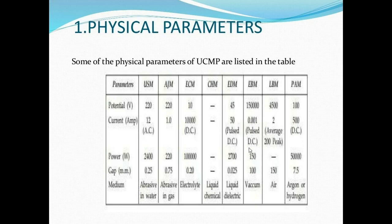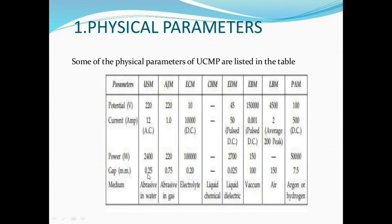The physical parameters include: current, voltage, power, gap, and medium. The gap is important because in unconventional machining, there is no physical contact between the tool and the workpiece, so a gap must be maintained. For each machining process, the specific gap dimension must be set. Key parameters are: voltage (potential), current, power, gap, and medium.